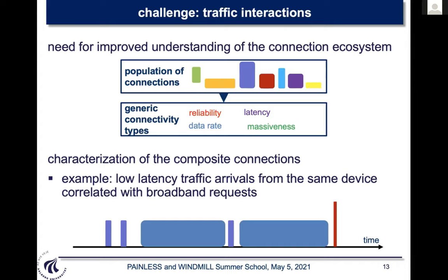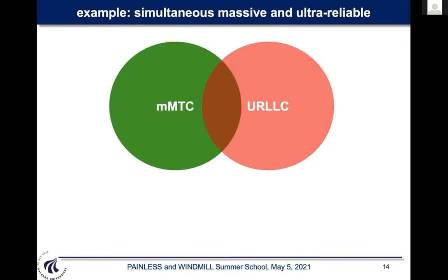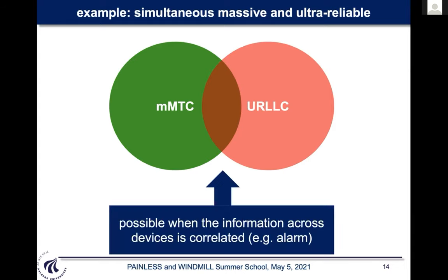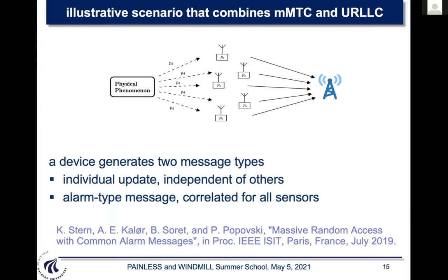Understanding this composite connectivity space is one important research area beyond 5G. There have been claims that traffic can be simultaneously massive and ultra-reliable — a paradox, because if we can offer URLLC for massive devices, it should be easy for few devices. This combination makes sense when information across devices is correlated. Consider a communication model where devices sporadically send individual sensing messages — temperature, battery state — as quasi-periodic massive connectivity messages.